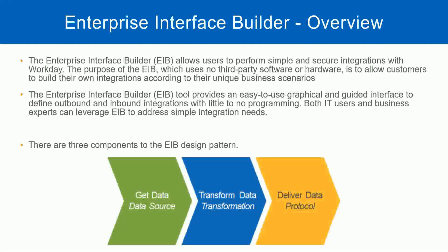These are the three components in an EIB design pattern: get data, transform data, deliver data. What we are going to do is configure these three steps. Where are we going to get the data from? That is something we have to configure. Do we need transformation? If yes, configure that; if no, leave it blank. And then deliver the data — how are we going to send the data to an external system? We have to configure that as well. So once we do these three steps, our EIB is ready, and we start exchanging information from Workday with an external system.